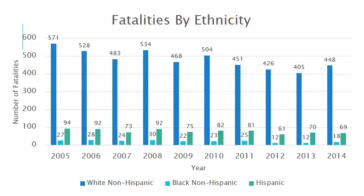Data concerning fatalities by ethnicity in agriculture was also analyzed. This chart shows the number of fatalities in three ethnic groups — white non-Hispanic, black non-Hispanic, and Hispanic — for each of the years in the 10-year period studied. The number of fatalities is much higher among white non-Hispanics than either of the other two groups, and the number of fatalities among Hispanics is higher than among black non-Hispanics, but both are still much lower than the white non-Hispanic group.